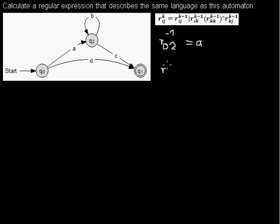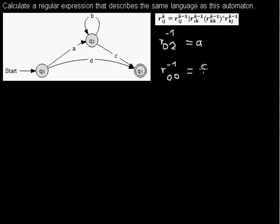Another example: you are not allowed to go through any other state, and you want to go from state 0 to state 0. You want to go from 0 to 0, and you don't have a loop here. So what will the regular expression be? You have to start in state 0 and end in state 0. You have to read nothing — and that is epsilon. That means you just stay here doing nothing.